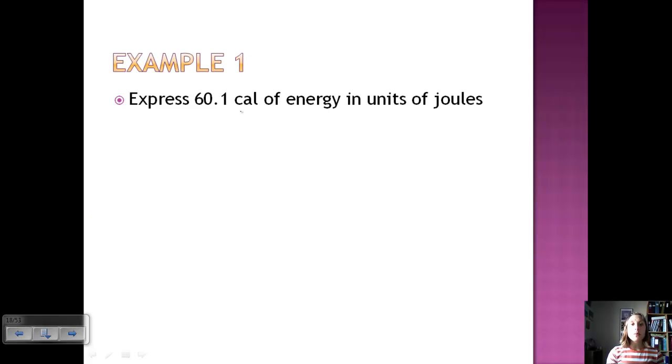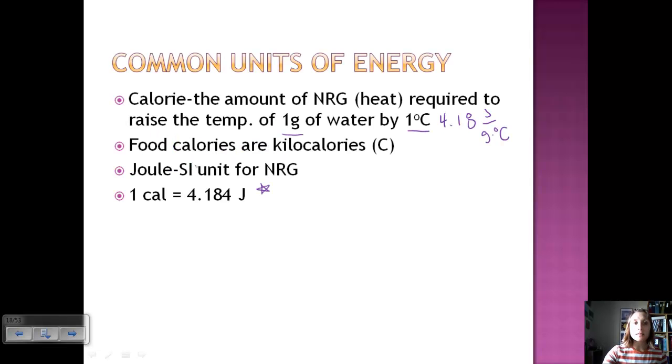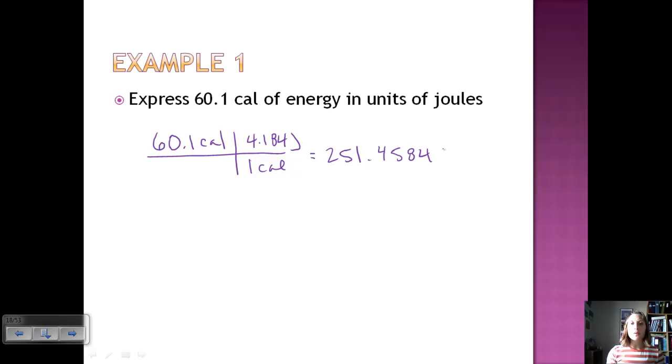So let's do an example. We're going to express 60.1 calories of energy in units of joules. We're going to start with our 60.1 calories. We can set up our railroad tracks to convert. And we know that for one calorie, we have 4.184 joules. So for every one calorie, there are 4.184 joules. Take your calculator. Because things are on top, you're going to multiply. So we're going to take 60.1 times 4.184 and get 251.4584 joules. Based on this problem, we want three significant figures, so our answer is 251 joules.